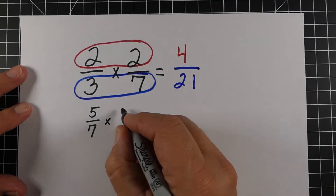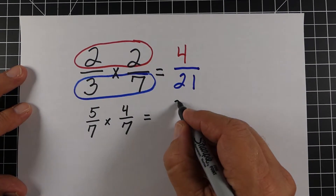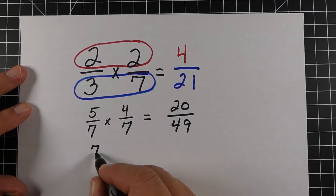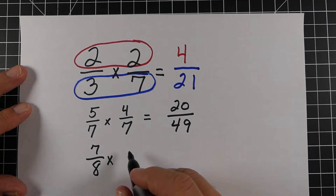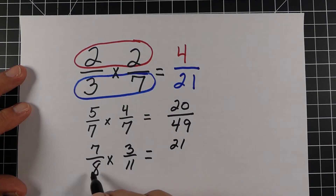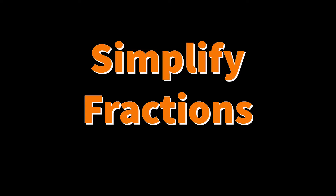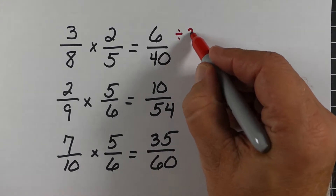Here are a couple more examples. Five-sevenths times four-sevenths: five times four is 20, seven times seven is 49. Another example: seven-eighths times three-elevenths — multiply the numerators, which is 21, multiply the denominators, we get 88, and that's our answer. Now, one of the things that comes up is simplifying the fractions. Here we have three different problems which we've multiplied and got the answers, but each of these can be simplified.